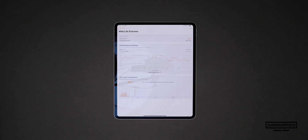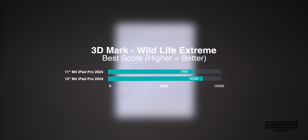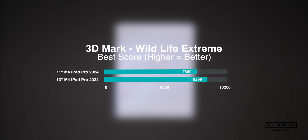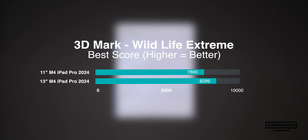Comparing this to the 11-inch iPad Pro which scored 7,860 with it also averaging 47.1 frames per second, you'll find that the score and the frame rate between both the 11 and the 13-inch iPad Pro sit at around a 5% difference.